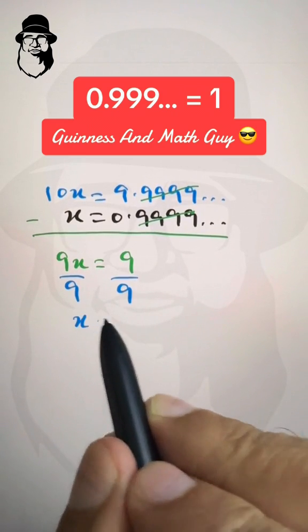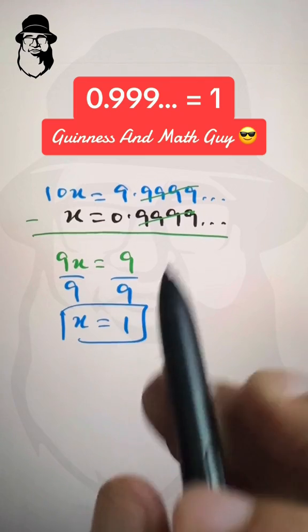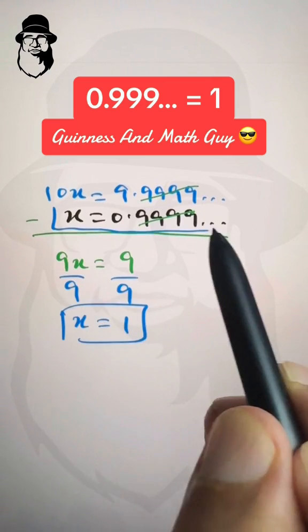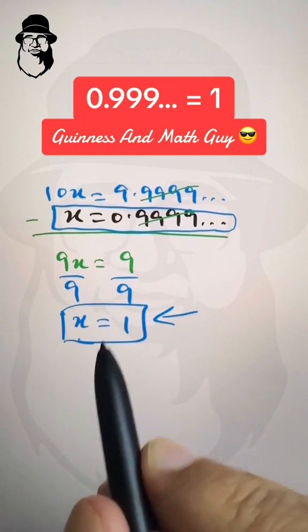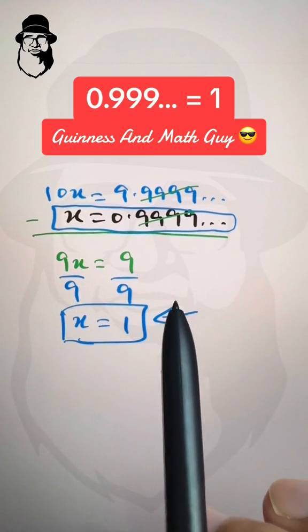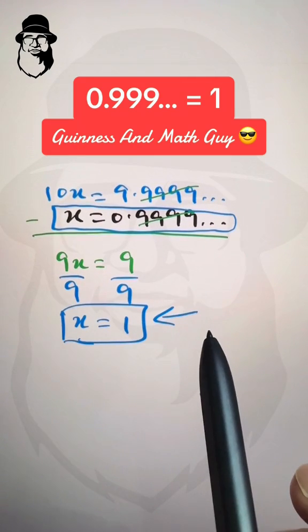And we have x is equal to 1. Now we had x is equal to 0.9999 repeating, and now we have x is equal to 1. They are actually equal. We did not break any rule of mathematics here.